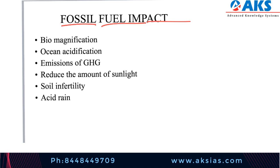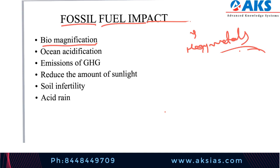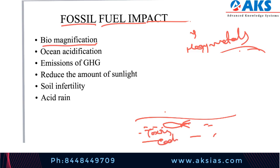Now let us understand the fossil fuel impact on our day-to-day life. First is bio-magnification — situations where toxins such as heavy metals like cadmium pass through trophic levels and become exponentially more concentrated in the process. For example, a small fish in aquatic life takes in toxins like cadmium, which accumulate in it. This fish is eaten by a bigger fish, where the concentration of toxins increases. Later, the bigger fish is eaten by an eagle, where the accumulation of toxins increases exponentially, putting that creature at risk.